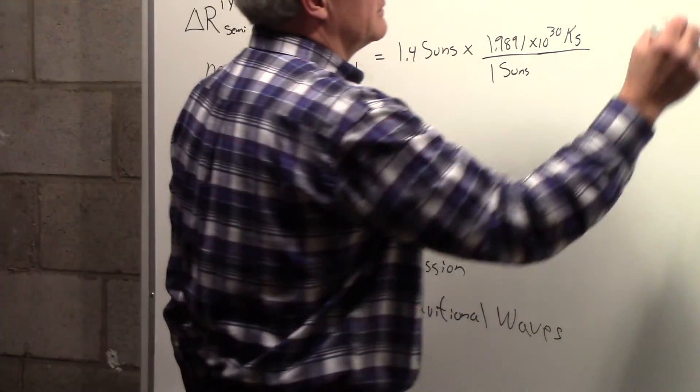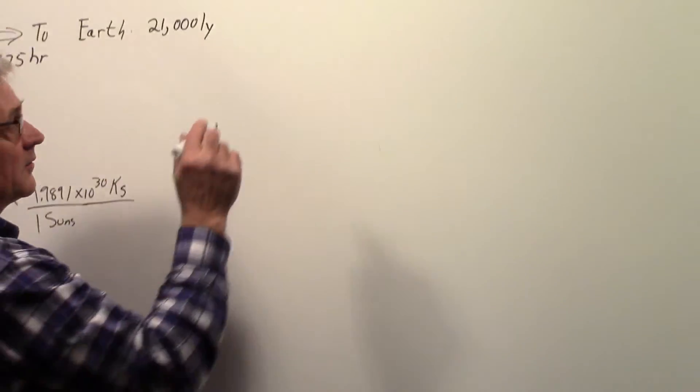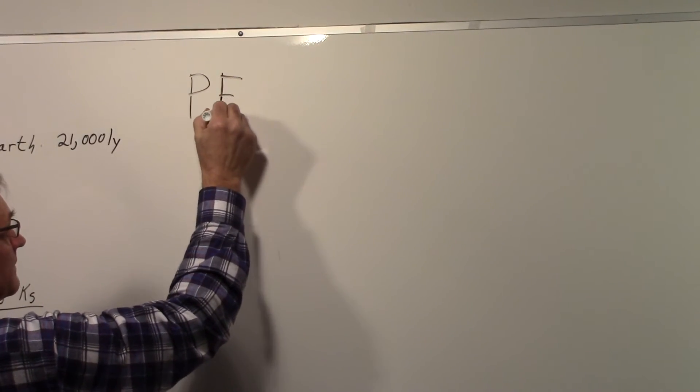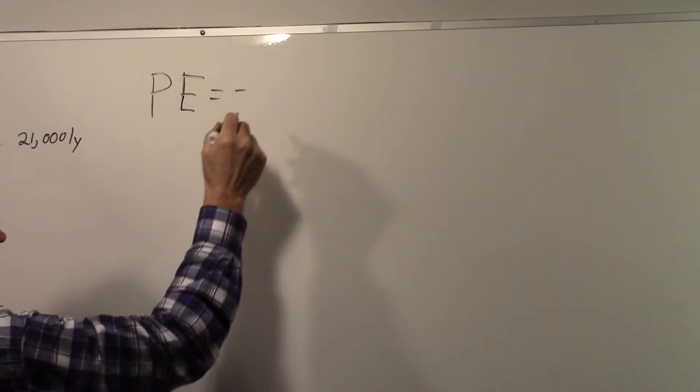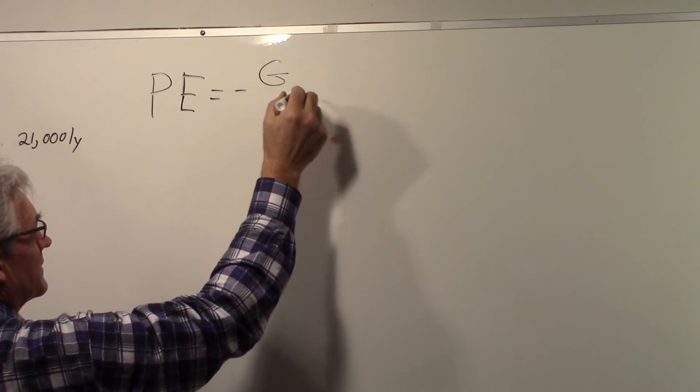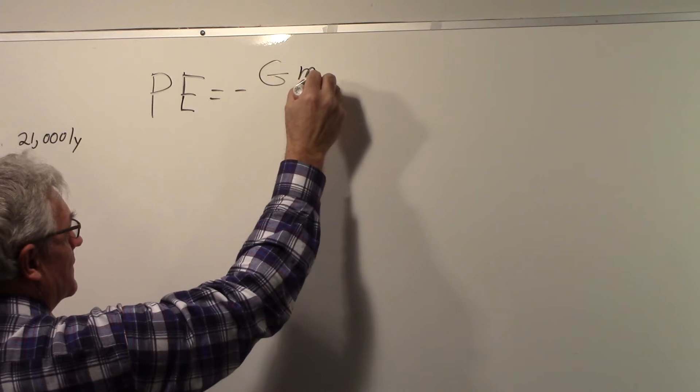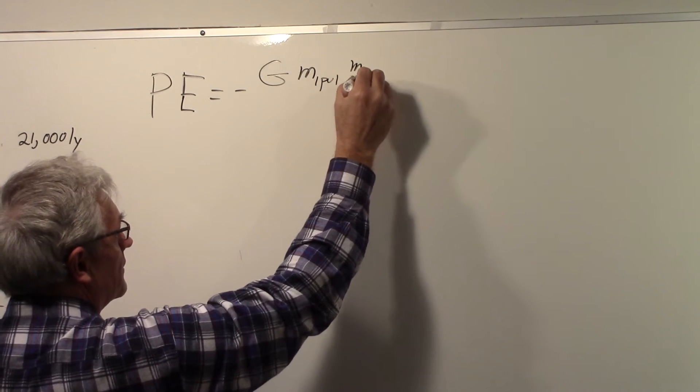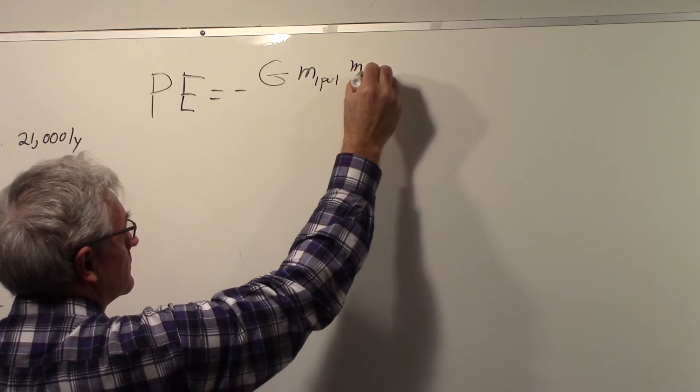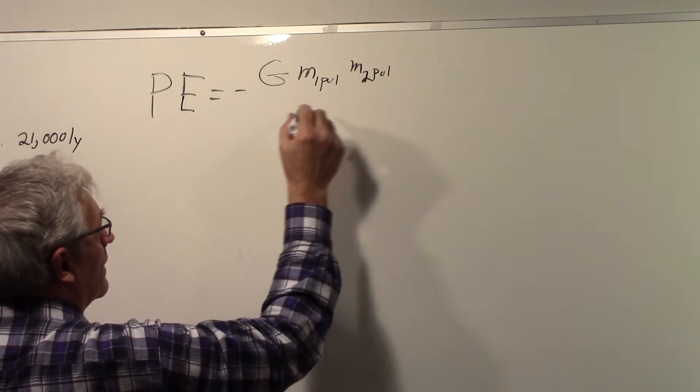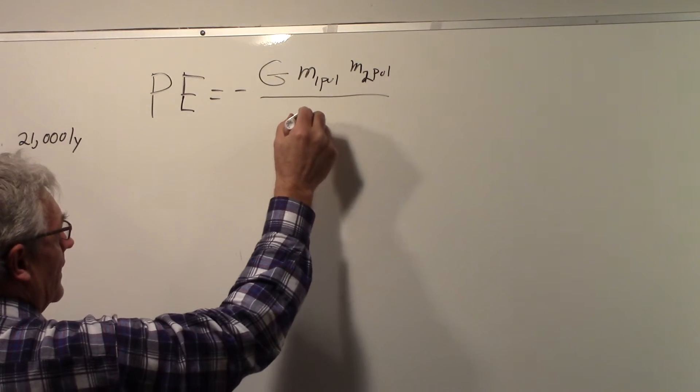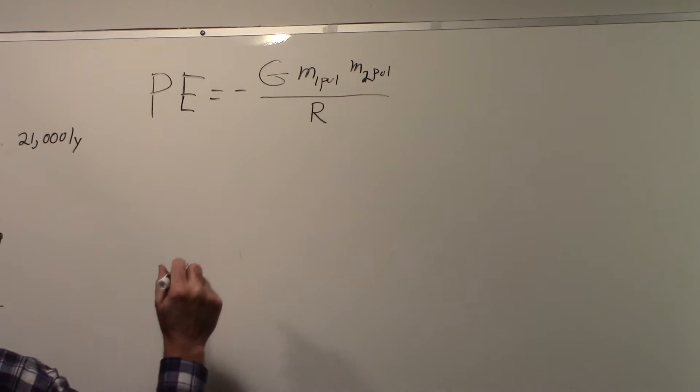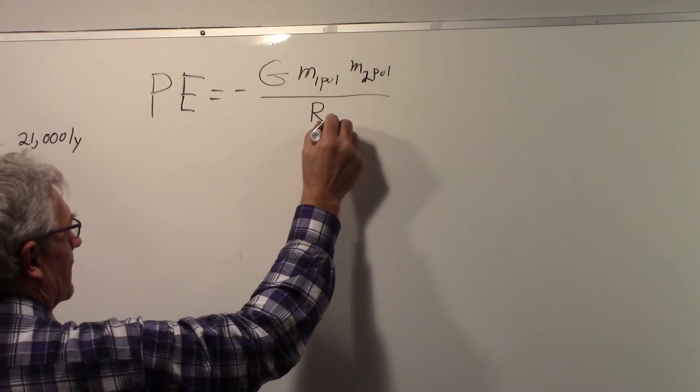So what we could do, again, in an approximate sense, we'll say that the potential energy of this system is the gravitational constant times the mass of pulsar 1 times the mass of pulsar 2, and that's divided by the distance between them, which is the semi-major axis.